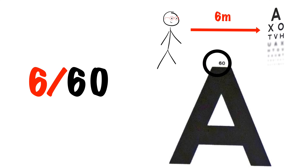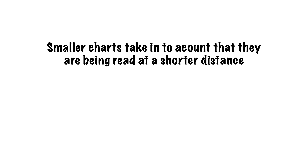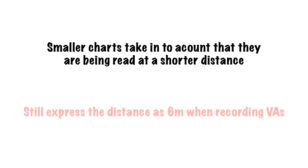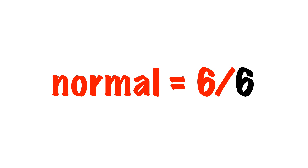If they can only see the top line, it will be expressed as 6/60. If we're using a smaller chart such as a three-metre chart, we still express the distance as six metres even though we are testing at less. Normal vision is 6/6 — they can see at six metres what they should be able to see at six metres. If you hear people talking about 20/20 vision, they're talking in feet.